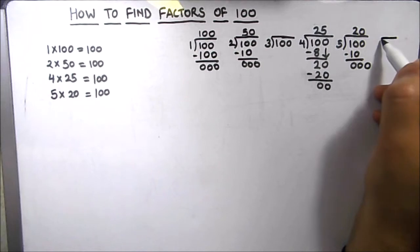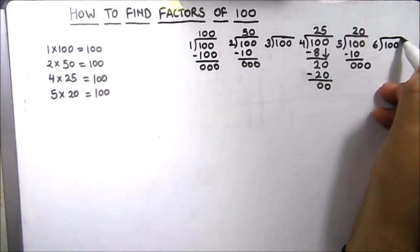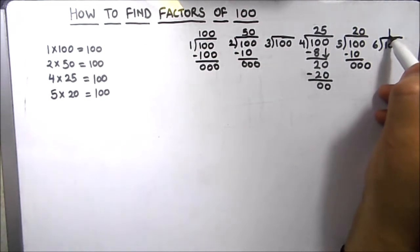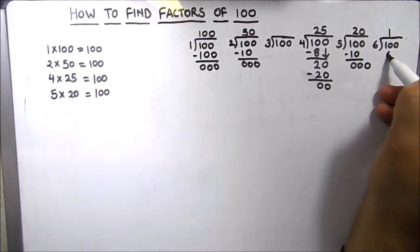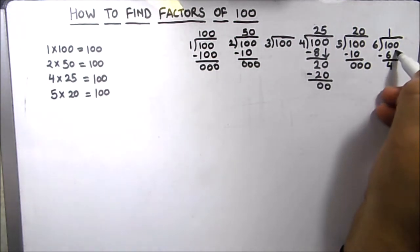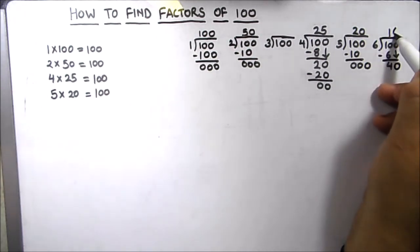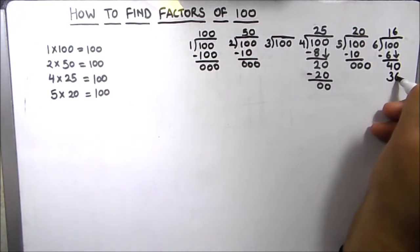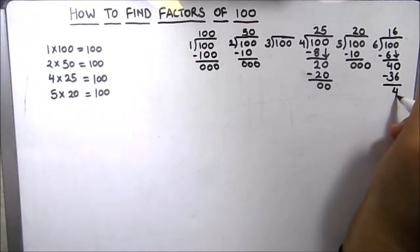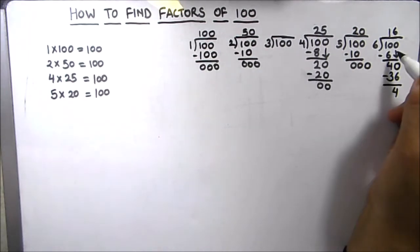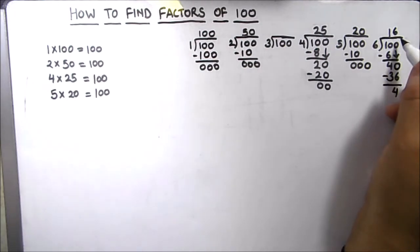Next we will divide 100 by 6. 6 times 1 is 6 and we got 4 as remainder. Then we drop down 0, and 6 times 6 is 36, and we got 4 as remainder again. 100 is not divided by 6 fully, so 6 is not a factor of 100.